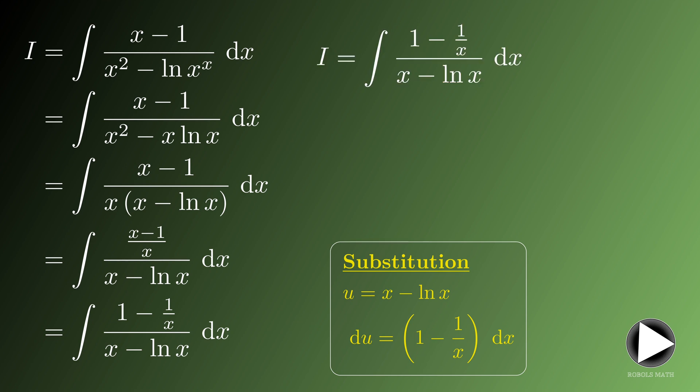If we apply this substitution, we get the integral of 1 over u du. The integral of this one is known and that's the ln of the absolute value of u plus the integration constant c.